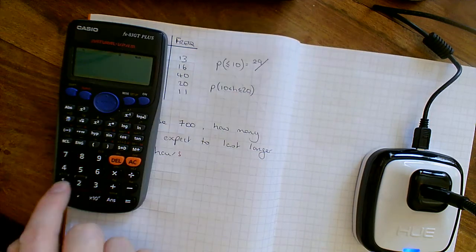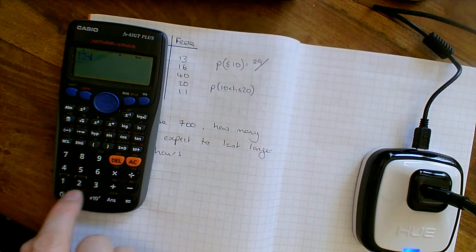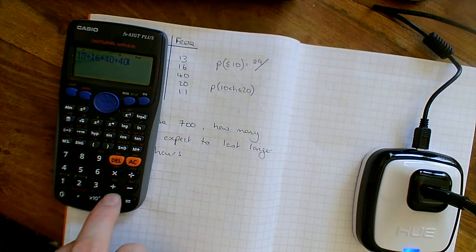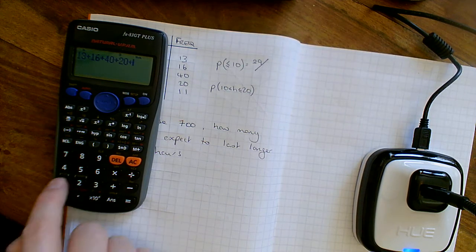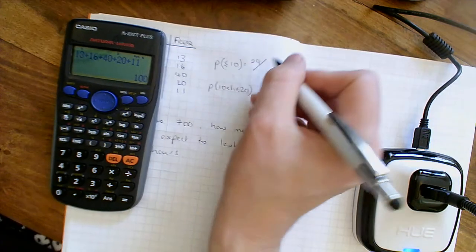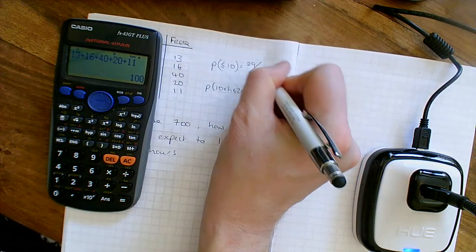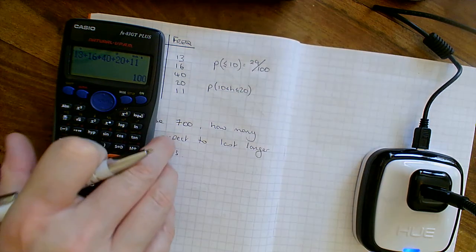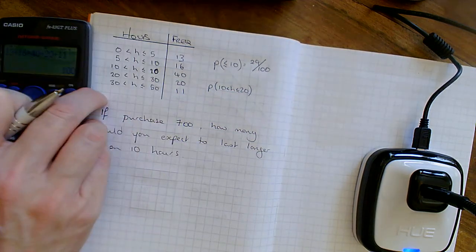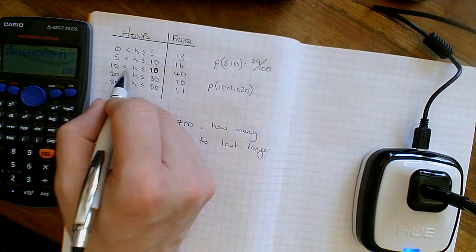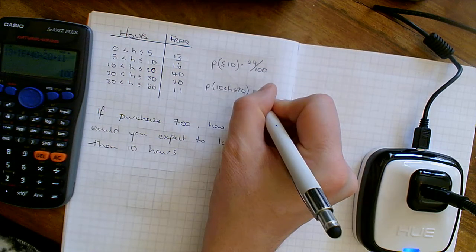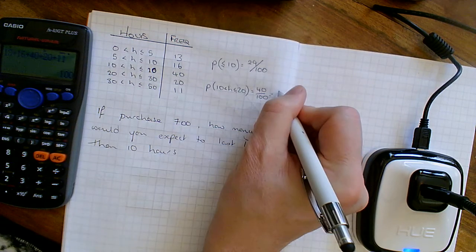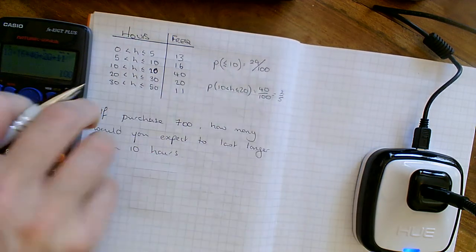And the total number is 13 plus 16 plus 40 plus 20. Oh, that was 14. Delete, delete, delete. 20 plus 11. Out of 100. And that will be the end of that question. Because 29 is prime number and doesn't go into 100. And the next one is anywhere between 10 and 20. So between 10 and 20 is 40 out of 100. Which equals 2 fifths.